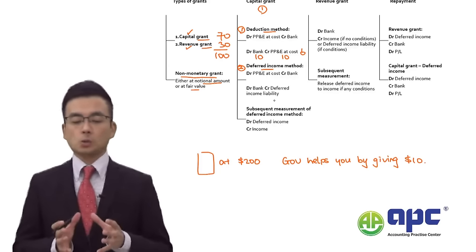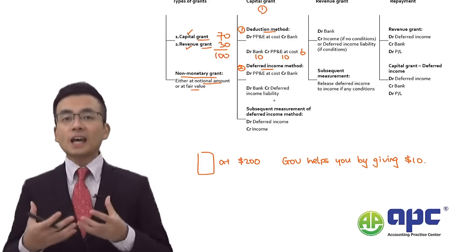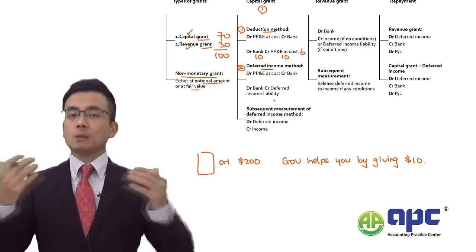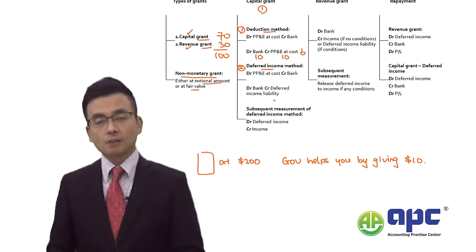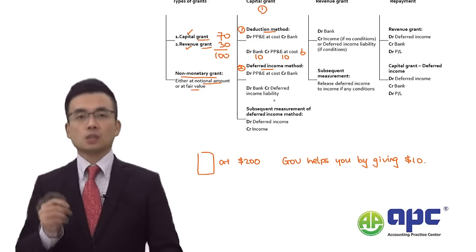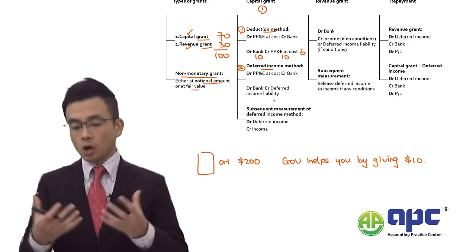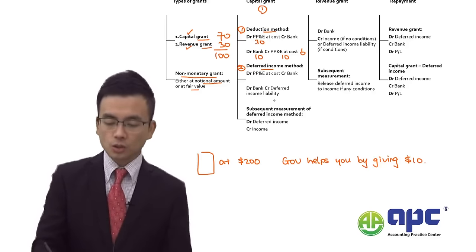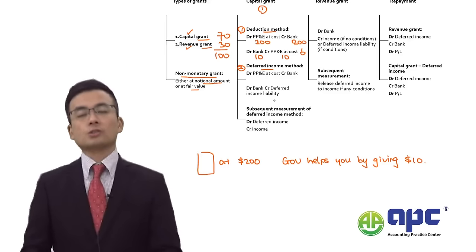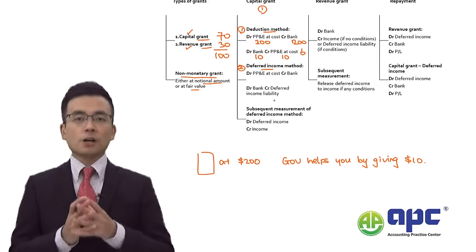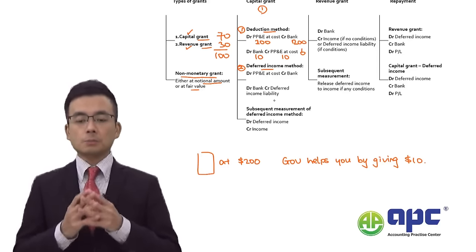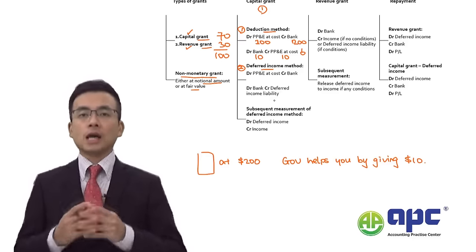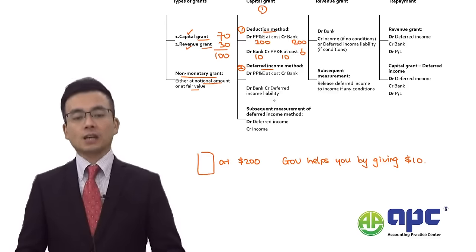When you acquired the equipment at $200, you debited PP&E at cost $200 and credited bank $200. By using the deduction method and netting the $10 grant against the PP&E cost, the net carrying amount becomes $190, which means you will have lower depreciation expenses in each subsequent year.